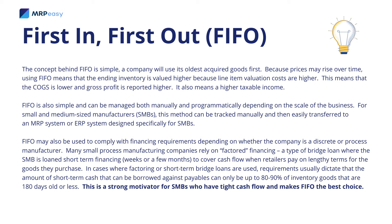For small and medium-sized manufacturers, FIFO can be tracked manually and then easily transferred to an MRP or ERP system designed specifically for small and medium-sized manufacturers. FIFO may also be used to comply with financing requirements. Many small process manufacturing companies rely on factored financing — a type of bridge loan providing short-term financing of weeks or a few months to cover cash flow when retailers pay on lengthy terms. Requirements usually dictate that short-term cash borrowed against payables can only be up to 80 to 90 percent of inventory goods that are 180 days old or less, making FIFO the best choice.